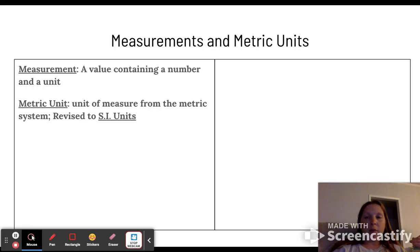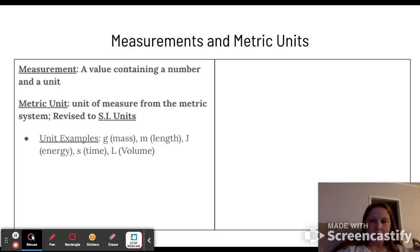We use SI units which came from originally the metric units, which you've probably heard of before. This is what we tend to use in science just because it's easier for comparing between different forms of data. Unit examples are grams for mass, meters for length, joules for energy, seconds for time, and liters for volume.